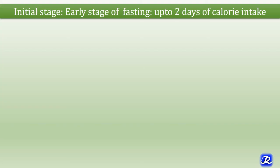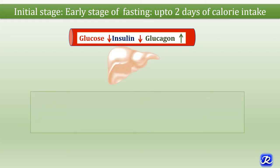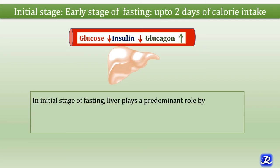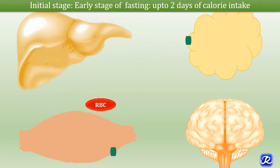The initial or early stage of fasting lasts up to 2 days and is characterized by decreased levels of glucose and insulin, and increased levels of glucagon. The liver plays a very dominant role in the initial stage of fasting, ensuring maintenance of blood glucose levels within normal limits and providing glucose to glucose-dependent tissues. Just as insulin signals the fed state, glucagon signals the starved state.